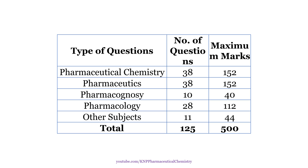This is the benchmark of maximum questions that can be asked in each subject area with maximum marks. Pharmaceutical chemistry — which covers organic chemistry, medicinal chemistry, inorganic chemistry, biochemistry, physical chemistry, and pharmaceutical analysis — will have 38 questions, giving a weightage of 152 marks.